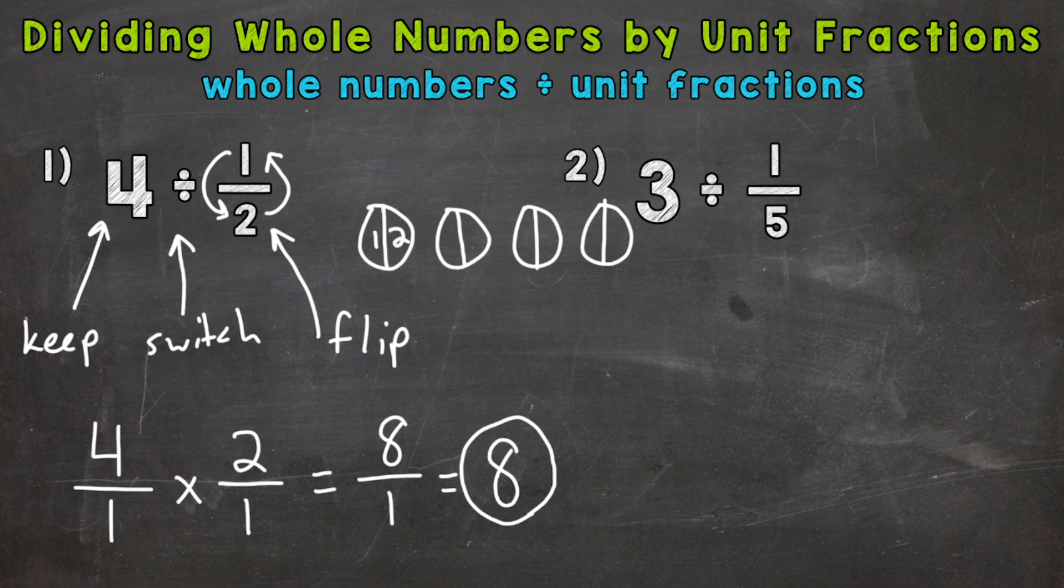All right, let's see how many pieces we have once we divided each whole in half. Well, one, two, three, four, five, six, seven, and eight. So we started with four wholes, divided in half, and we ended up with eight pieces, and that model matches our answer.